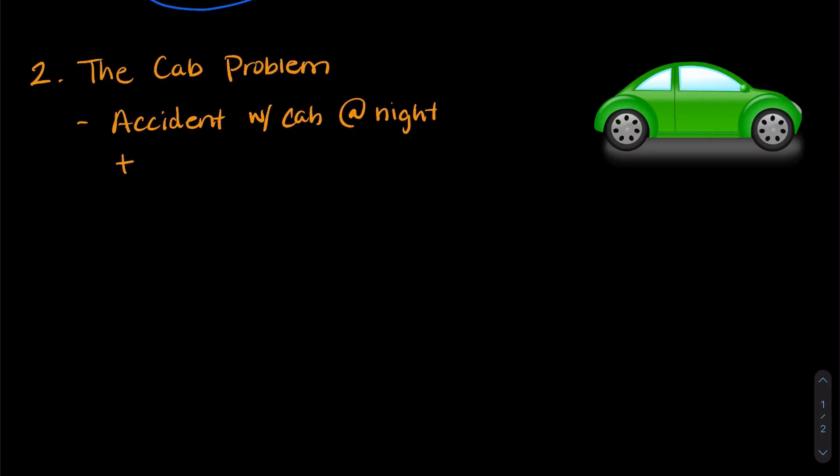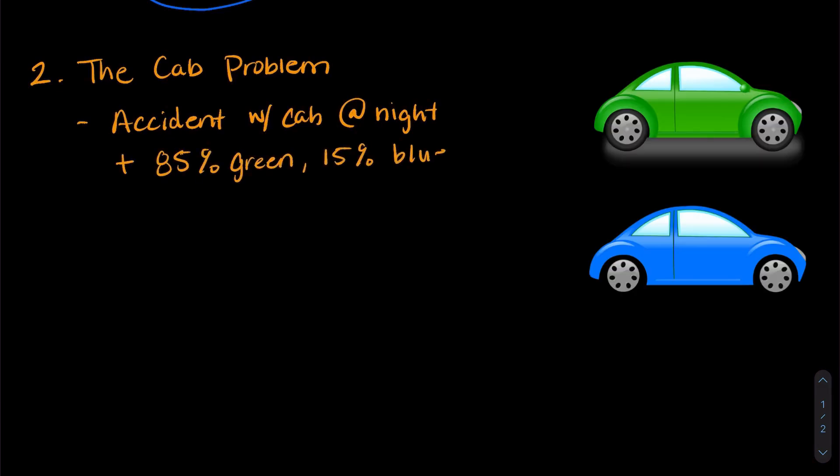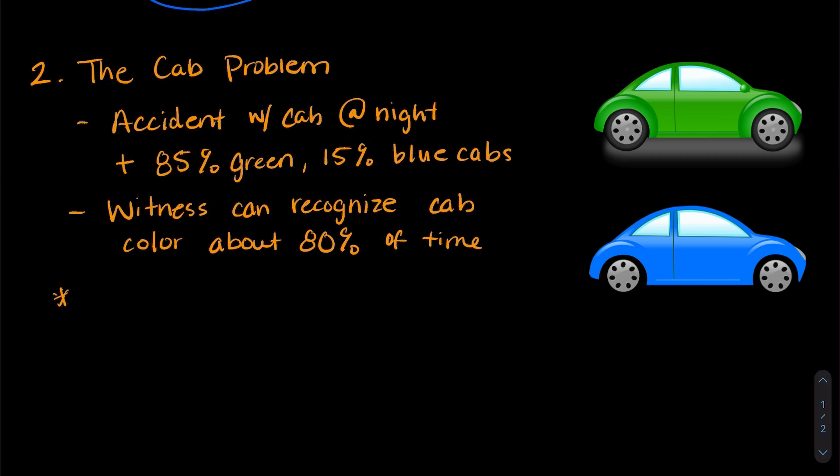All right, moving on. The second problem we're going to talk about is called the cab problem. And this is called a base rate fallacy problem. So there's an accident with a cab at night in a city. And in the city, there are 85% green cabs and 15% blue cabs. And a witness can recognize the cab color about 80% of the time. So the question is for this accident, what is the chance that the cab is green?